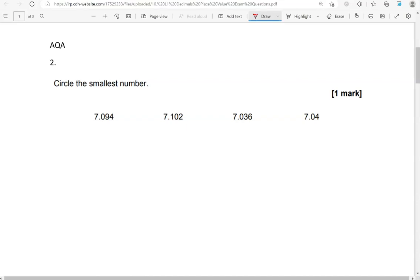So we've got 7.094, 7.102, 7.036, 7.04. They all begin with 7.